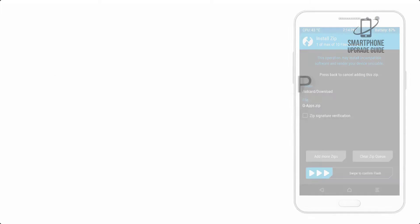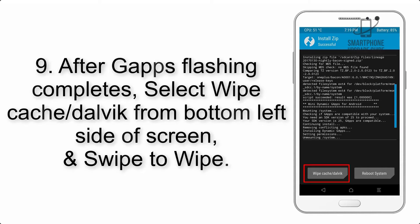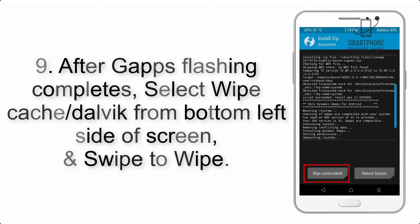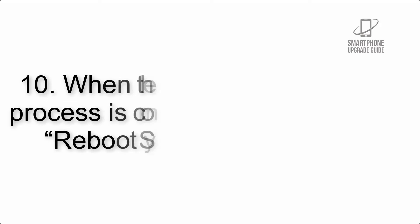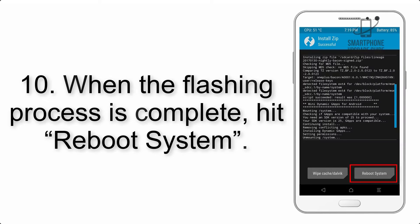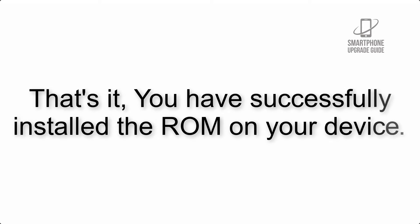Step 8: Flash the GApps zip package in the same manner. Step 9: After GApps flashing completes, select wipe cache and Dalvik from the bottom left side of the screen and swipe to wipe. Step 10: When the flashing process is complete, hit reboot system. That's it — you have successfully installed the ROM on your device.